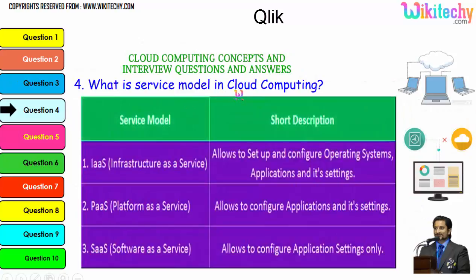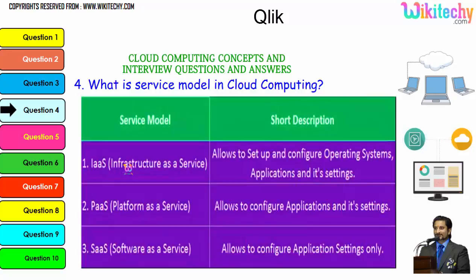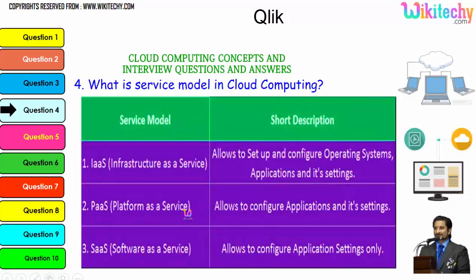The question is: what is the service model in cloud computing? There are three major service models. The first is Infrastructure as a Service, which allows you to set up and configure the operating system, application, and its settings — you are given a server and can install whatever you want. Platform as a Service allocates you a specified operating system and you can add any applications and settings. Software as a Service gives you a software application where you can configure application settings.